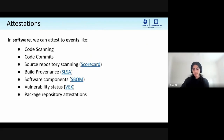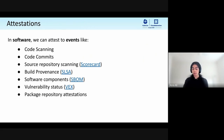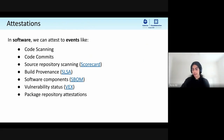In the software delivery pipeline, the relevant attestations may be things like code scanning, code commit, source repository control scanning, build provenance, software component analysis to determine what build dependencies are going in, and package repository attestations, among many more. There are tons of places where things could go wrong, and each of these could benefit from attestations that describe what is actually occurring. For example, an SBOM attestation tells you what's going on from a dependency to a build step.